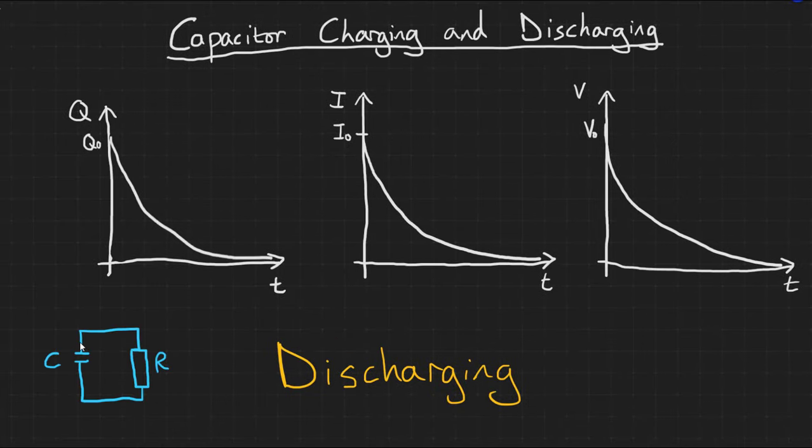Let's disconnect the battery and put a resistor into the circuit instead. This will result in the capacitor discharging through the resistor. At first, there is a big potential difference due to the difference in charge between the two plates. This means that a large current will flow.